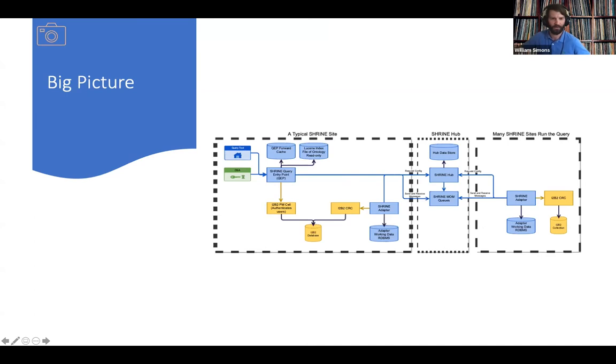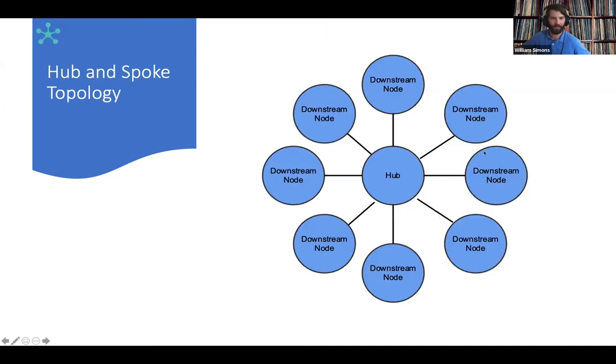And finally, we have the sort of high level view of how each of those components fit together. This is what we refer to as our hub and spoke network topology. You can see all of these sites we refer to as downstream nodes. They're downstream from the hub. An example, the site that we were seeing earlier might be, for instance, this downstream node, which would communicate out to the hub, not with any of the other sites, and use the hub to send those messages out.